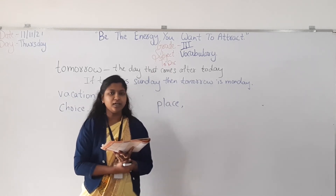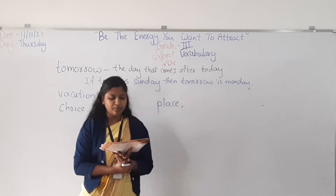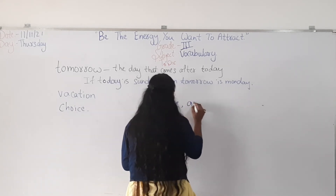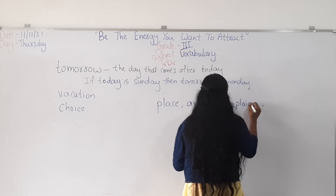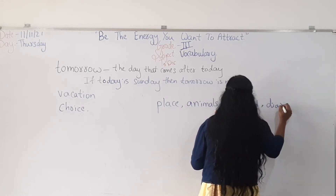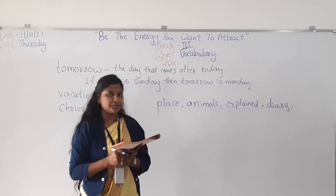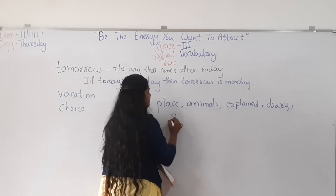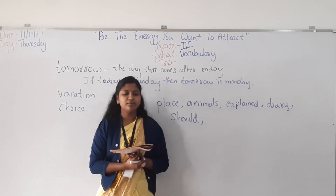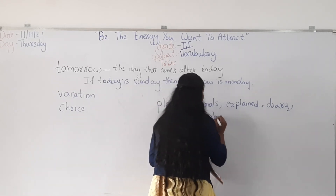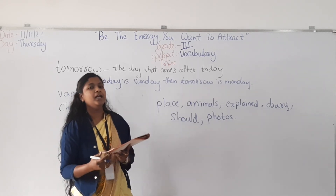Our teacher explained what each animal was. I noted everything down in my diary. The next word was animals, then explain, then diary. Some children were petting the animals. Our teacher told us that we should not pet them. We took many photos. We had a lot of fun.